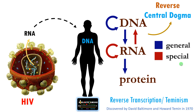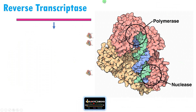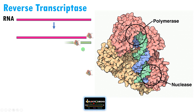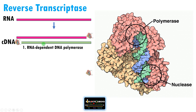Now let us see the enzyme behind this reverse transcription. The enzyme involved is reverse transcriptase, an enzyme with three activities — it has polymerase activity and also nuclease activity. Suppose this is the RNA of the virus; during reverse transcription, this RNA is used as a template for making a DNA or cDNA. Complementary DNA is synthesized by reverse transcriptase. This produces an RNA-DNA hybrid. The first activity is RNA-dependent DNA polymerase — this DNA strand is synthesized using the RNA template.